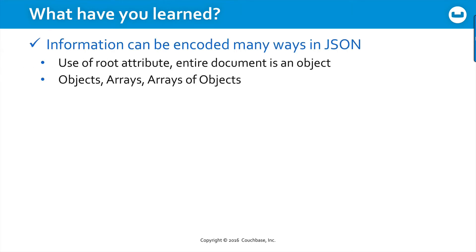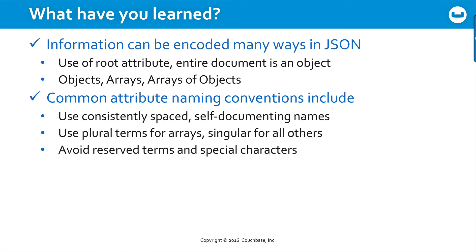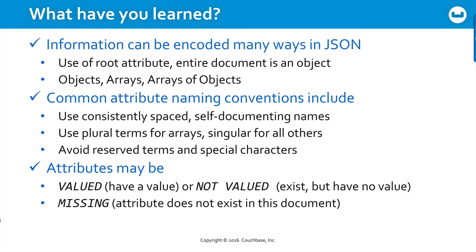So what have we learned here? First, information can be encoded in many ways in JSON — it's just a text file comprised of nested objects and arrays. We looked at distinctions in how you may or may not use a singular root attribute within a document, or whether you might want the entire document to be a single object with all top-level attributes. We looked at choices around whether to use an object, an array, an array of objects, or an array of simple values. We also looked at common attribute naming conventions, including consistent spacing, self-documenting names, plural terms for arrays, singular for all other attributes, and avoiding reserved terms and special characters. Finally, we saw that attributes in JSON documents may be valued or not valued, missing, or null — and Nickel allows you to query against all of these factors, meaning they can all carry semantic meaning within your data model.